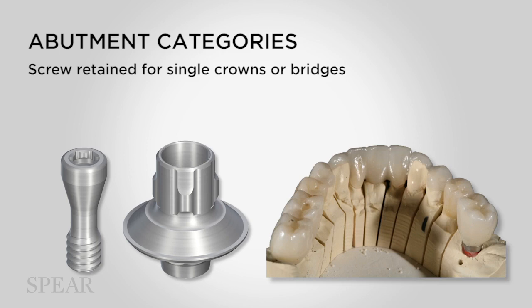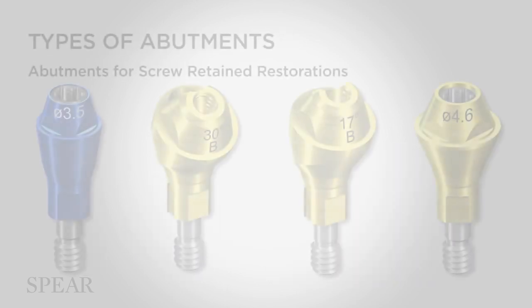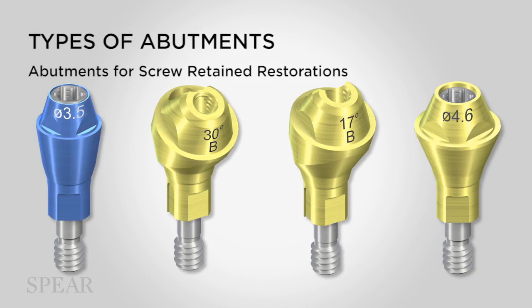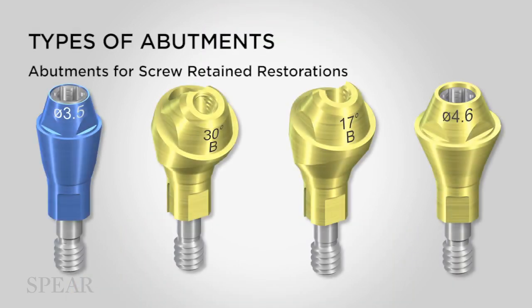Here's an example of some posterior single units that are going to be screw retained. You can see the opening through the center of the crown where the screw will go, and that opening will then be filled with composite. For screw-retained restorations using multiple implants — such as a bar-retained overdenture, hybrid, or multiple-unit bridge — sometimes the placement of the implants doesn't allow a path of insertion, so the abutments placed on top need to be angled in order to create that path of insertion.